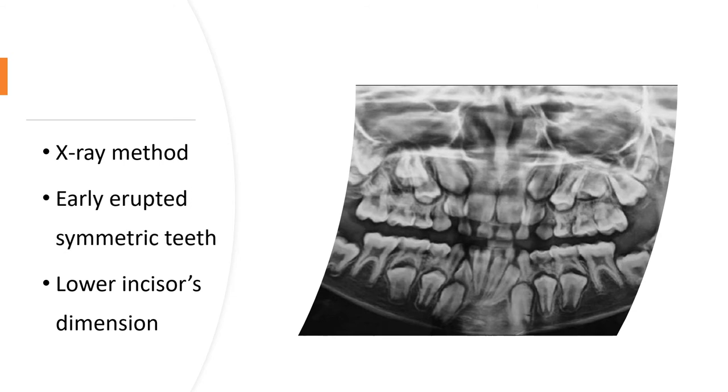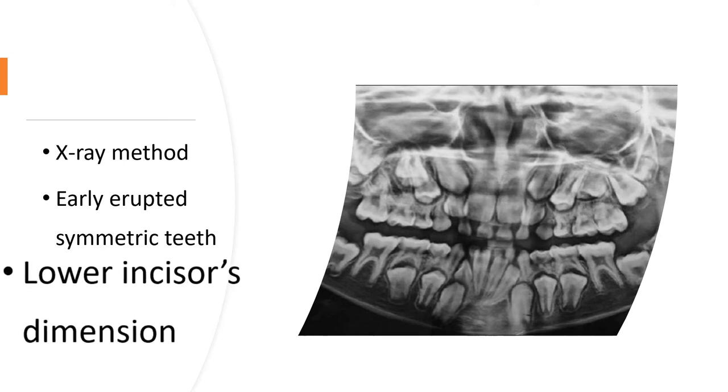To determine the size of unerupted premolars and canines, another tool is to use the lower incisors' mesiodistal width. The correlation between the sizes of mandibular incisors and the sizes of cuspids and bicuspids in both the maxillary and mandibular arches is high enough to predict the required space for permanent teeth to erupt. But why mandibular incisors and not the upper ones? The upper incisors are not used in prediction methods since they may show too much size variability, giving low correlation with other teeth.